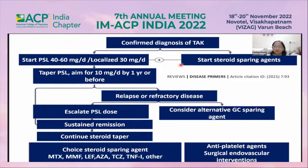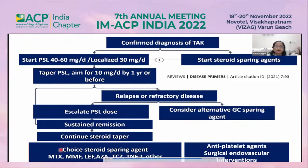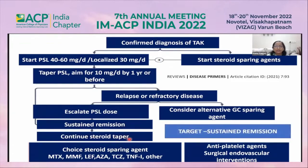In Takayasu, steroid-sparing agents should be started upfront — unlike in giant cell arteritis. At the end of one year, the prednisolone dose should be 10 mg/day, which is higher than in GCA. For refractory or relapsing disease, increase the prednisolone dose and consider alternative steroid-sparing agents: if giving mycophenolate, switch to methotrexate; if on azathioprine, switch to mycophenolate. If sustained remission is achieved, continue steroid taper.